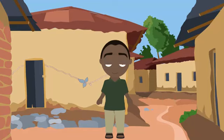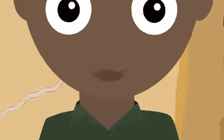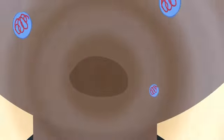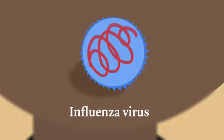Before we look at the five different kingdoms, there is one group of organisms we should look at first. They are called viruses. While Bob is enjoying the fresh air, he inhales a virus. This is the influenza virus — it's what causes what is commonly called the flu.